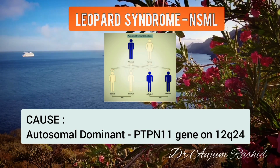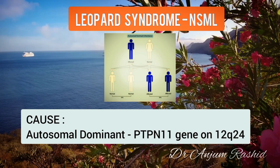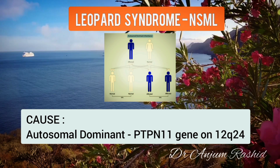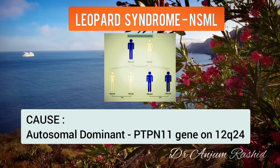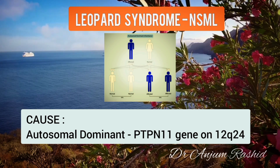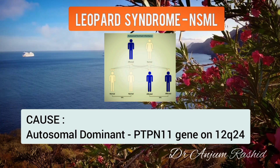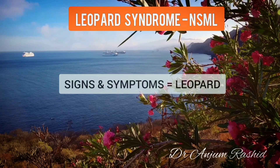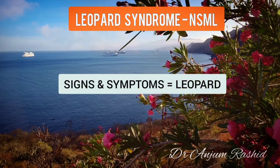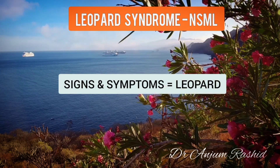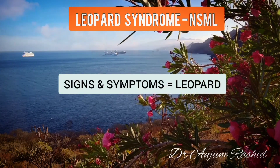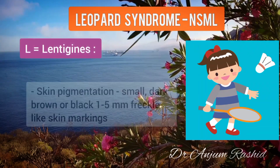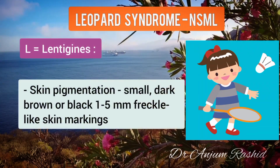Regarding the causes, LEOPARD syndrome is inherited as an autosomal dominant trait. This means that a person only needs the abnormal gene from one parent in order to inherit the disease. Now, the name LEOPARD stands for the different problems of this disorder.